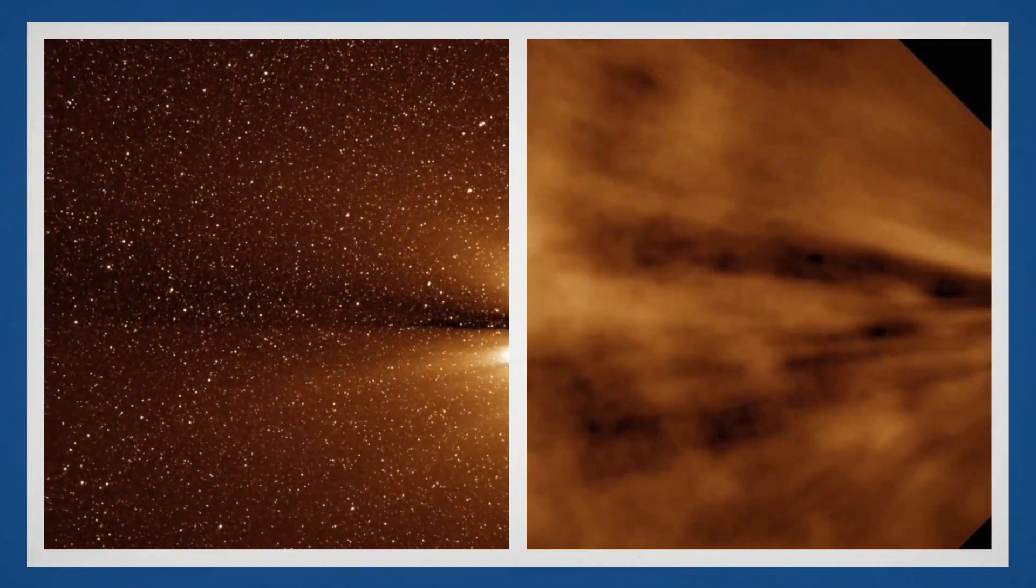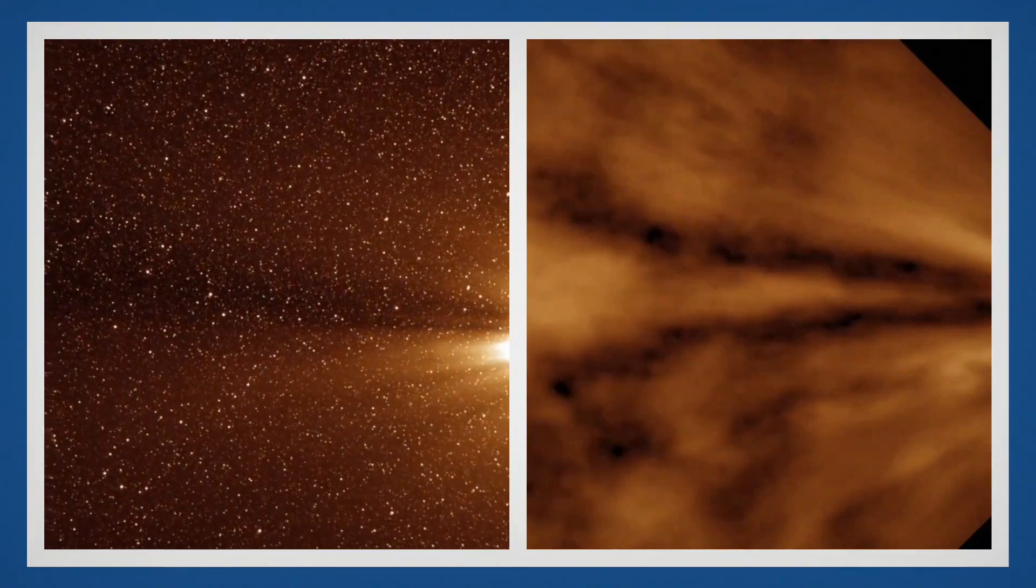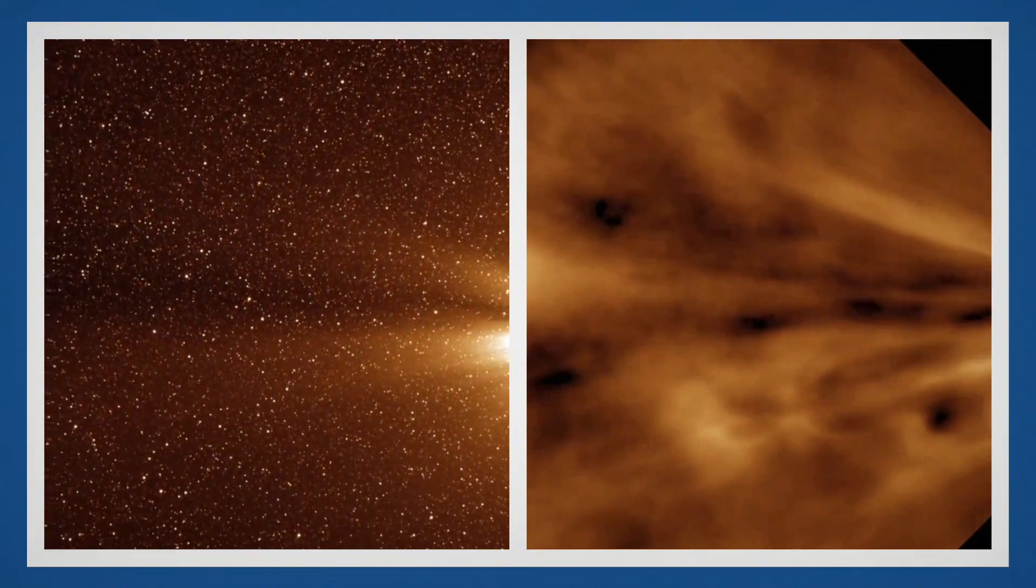To find this transition, scientists took images of the faint solar wind and used an algorithm to dim the competing brightness of background stars and dust.